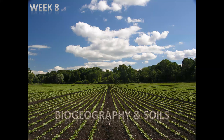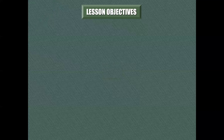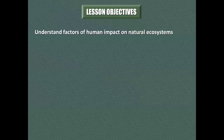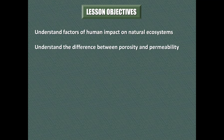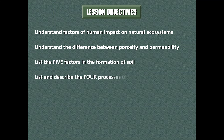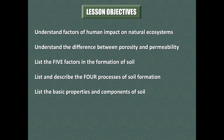It's a rather small unit, really only two weeks, like the last unit on climate classification and climate change. This one includes biogeography and next week we'll get into biomes. The objectives for the lesson include understanding human factors on natural ecosystems, the difference between porosity and permeability, the five factors in soil formation, the four processes of soil formation, and the basic properties and components of soil.